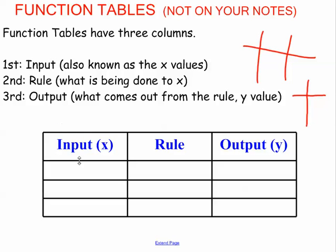The first column is your input column, which is going to be your x value. Your second column is your rule, or what we're going to do to x. And then the third column is your output, which is what happens to x after you follow the rule. Let's just say that my rule is 3x plus 4. So if I told you that x was 2, and I plugged 2 in for x, that would be 2 times 3 is 6, plus 4, that would give me 10.